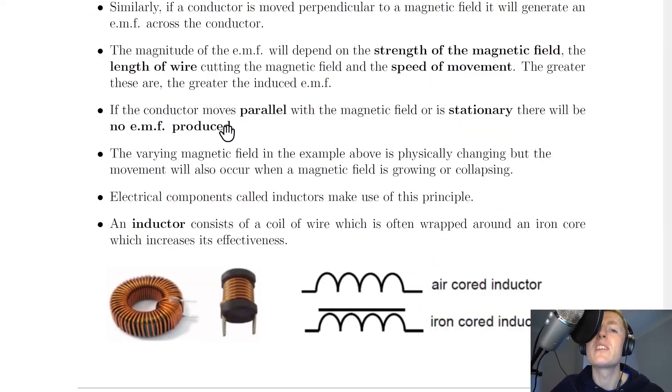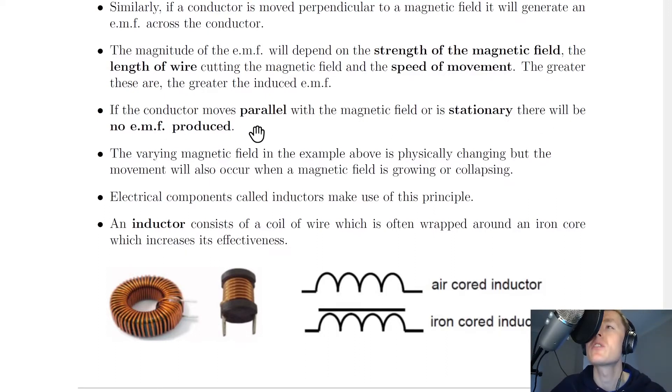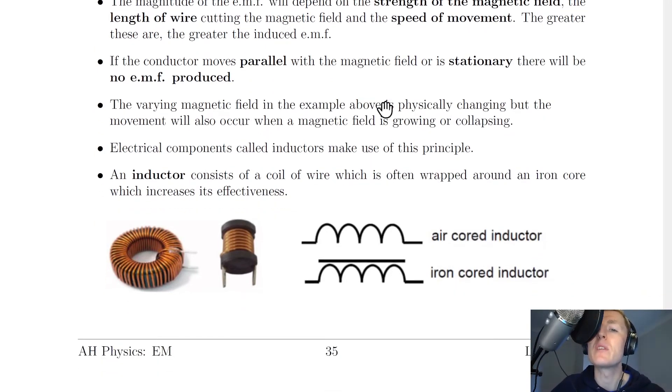Going back to the notes, it says that if the conductor moves parallel with the magnetic field or is stationary, there will be no EMF produced, and we just saw that. The varying magnetic field in the example above is physically changing, but the movement will also occur when a magnetic field is growing or collapsing. Electrical components called inductors make use of this principle.